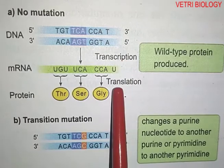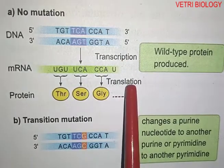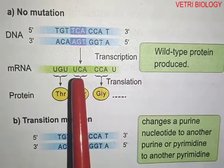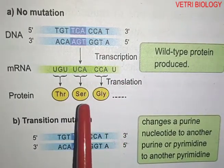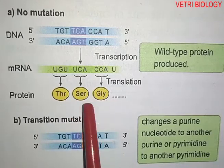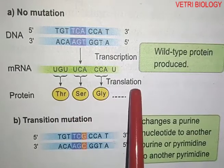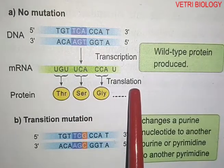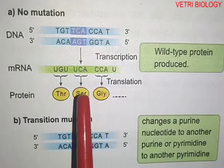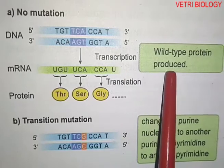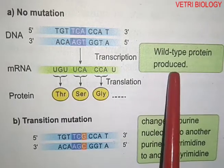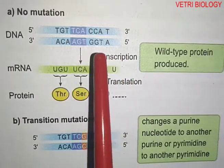Transcription is the process of copying DNA into RNA. The next step is translation — converting nucleic acid information into protein information — which is called translation. If there is no mutation, wild type protein is produced.